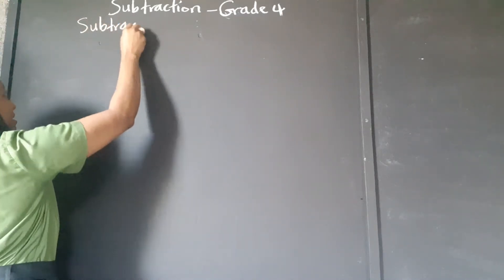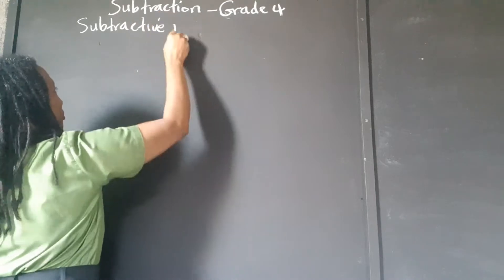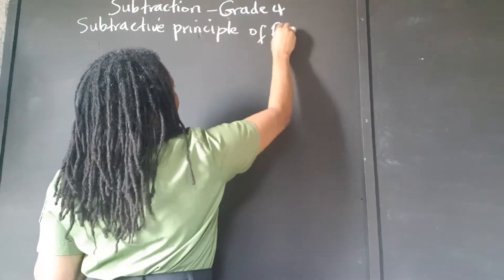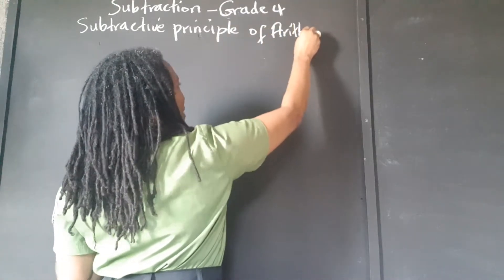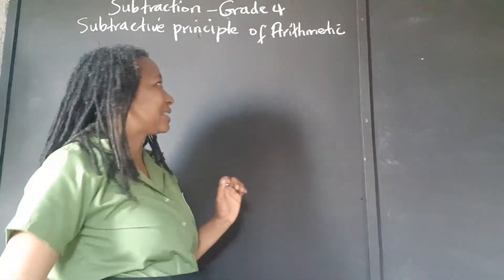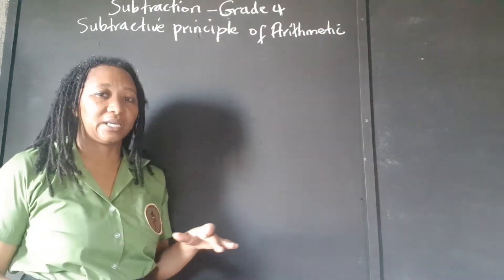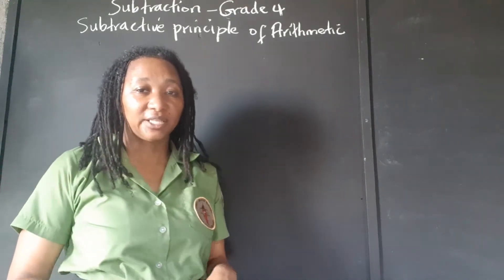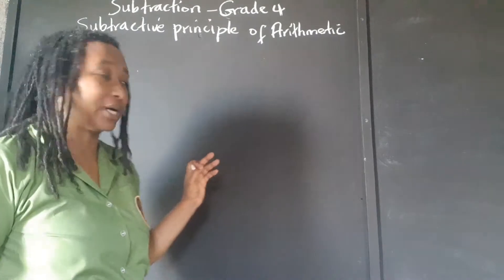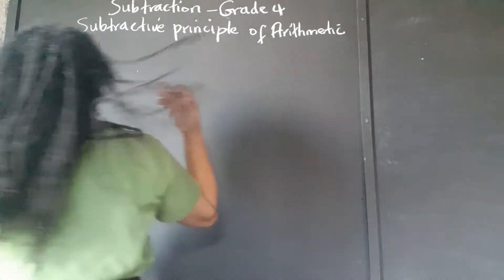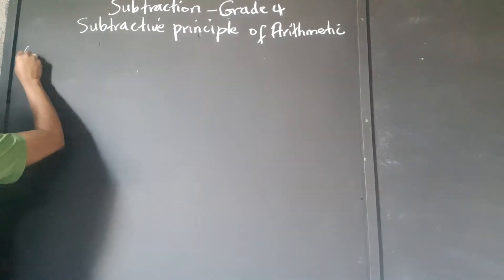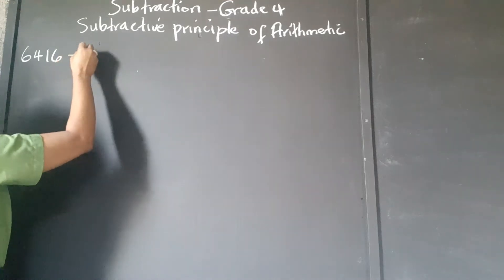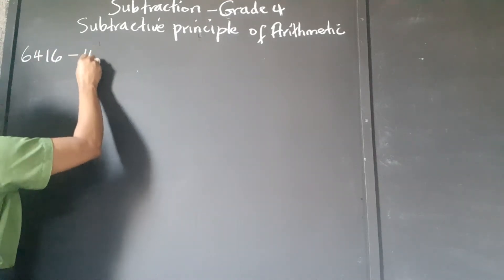This is the subtractive principle of arithmetic. There are four basic principles of arithmetic: addition, subtraction, multiplication, and division. So we're looking at subtraction. Now I'm going to put a set of operations that we're going to do.